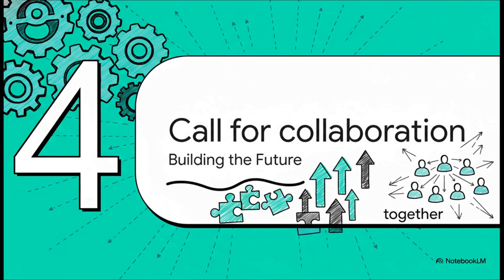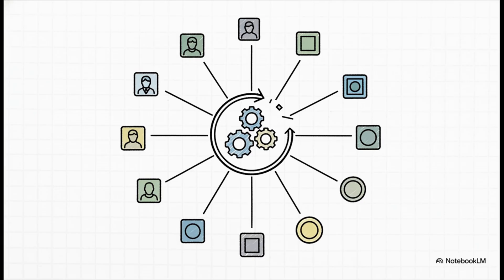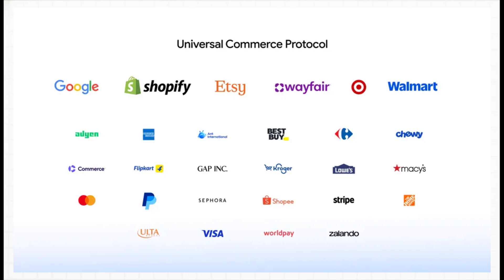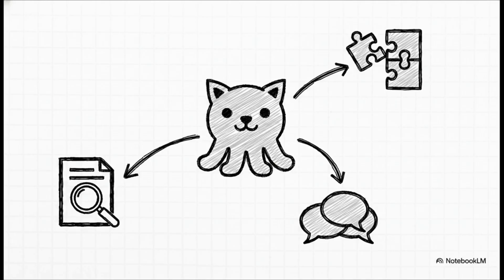This brings us to the final and probably most important part of this story. UCP is all about building the future of commerce together. It's not some proprietary technology locked away in a vault — UCP was co-developed with over 20 different partners from across the industry. It's a true open-source project, and its future will be shaped by its community. Whether you're a developer, a business, or a platform architect, you can explore the GitHub repository, jump into the discussions, or contribute code directly. The goal is for everyone to collectively build this new conversational future for how we shop.